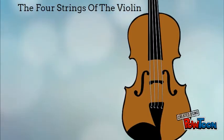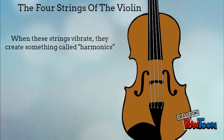There are four strings of the violin: G, D, A, and E. When these strings vibrate, they create something called a harmonic.